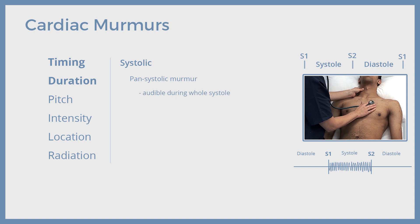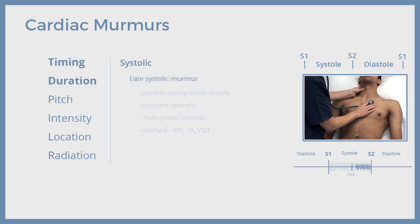Pan-systolic murmur, as the name suggests, is audible throughout the systole and has a constant intensity throughout. It is also called a holosystolic murmur. This murmur is heard in mitral or tricuspid regurgitations, and in ventricular septal defects. The next systolic murmur is late-systolic. It starts in the middle of the systole and then extends until S2. This murmur is heard in cases of mitral valve prolapse.